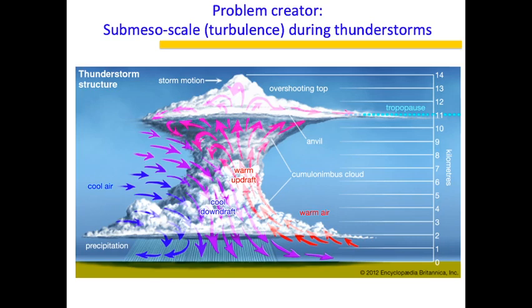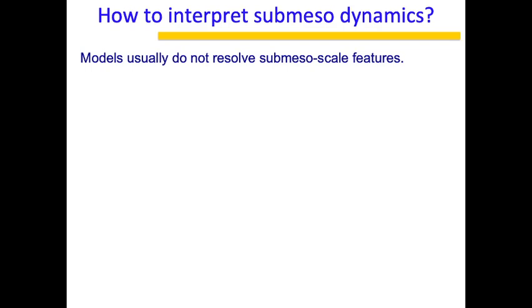The other problem creator is submesoscale turbulence during thunderstorms. Updrafts and downdrafts cause a lot of turbulence. Turbulence is less than 10 kilometers in space and it is a very quick event — it has a timescale of less than one hour or even just minutes. These turbulence updrafts lead to a lot of convective cloud formation and can lead to very intense thunderstorms. So submesoscale systems play a very important role in thunderstorm formation.